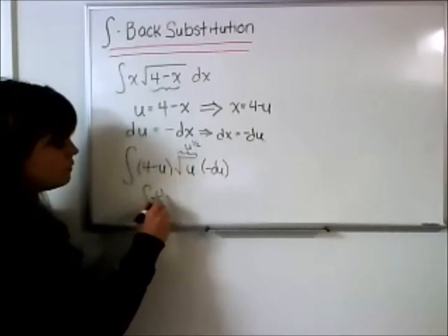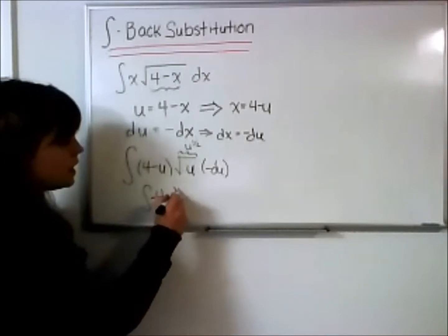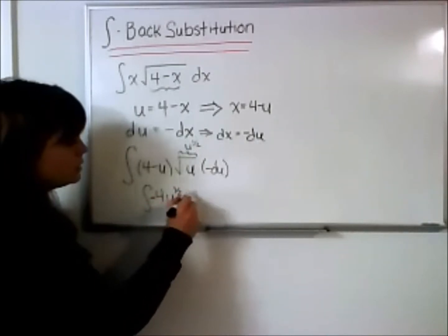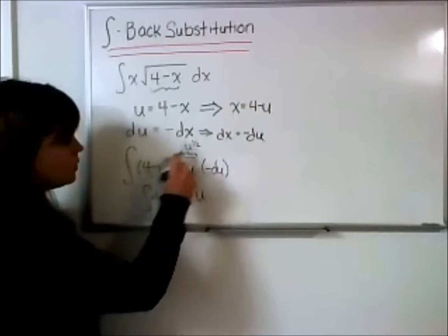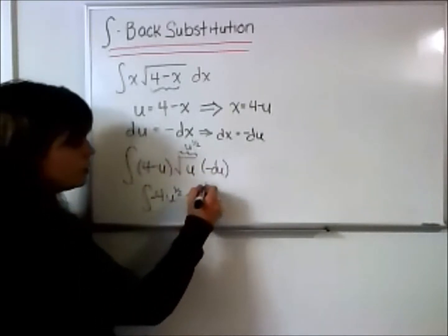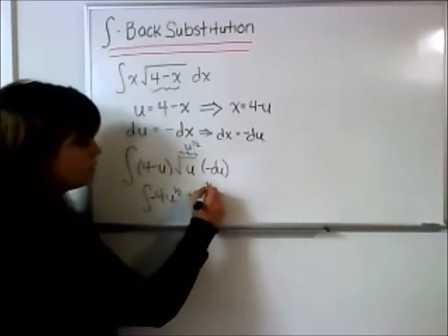I'm also going to bring in this negative sign, so I'm going to distribute this over this quantity. So we have a negative 4u to the 1 half plus u to the 1 half plus 1, which is 3 halves, du.